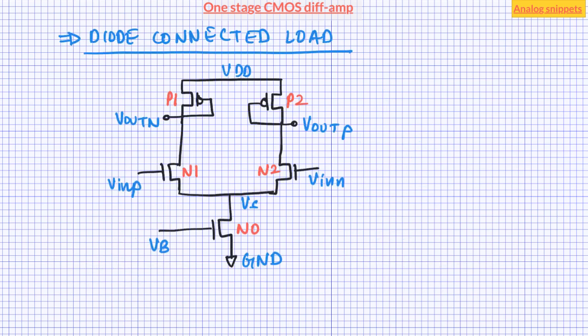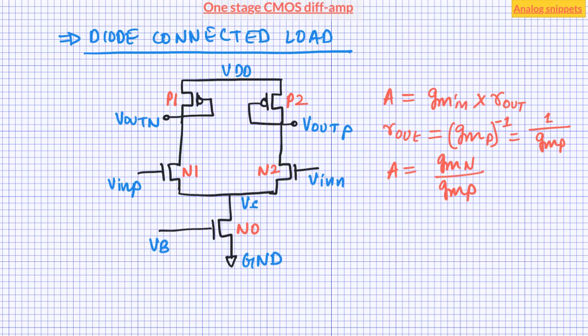The first topology is the diode-connected load topology. Gain of an amplifier is the transconductance provided by the input stage multiplied by the resistance offered by the load stage. Since the resistance offered by a diode-connected PMOS transistor is simply 1 over its transconductance, the gain of this stage is simply GMN over GMP. Notice the inverted polarity: if the positive input is taken in the left branch, then the positive output is taken in the right branch.